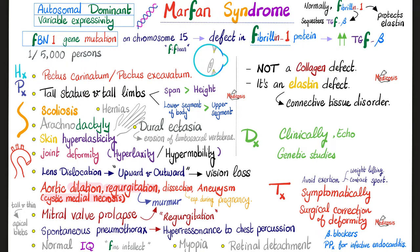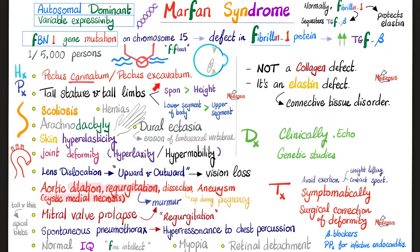Signs and symptoms of Marfan syndrome include chest wall deformities such as pectus carinatum — the sternum bulging outwards like the keel of a boat — and pectus excavatum, where the chest wall is sunken inward as if excavated. Patients are very tall and very thin, with long limbs.